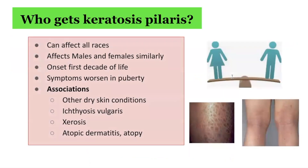Who gets keratosis pilaris? It is most common in adolescents, with 50–80% affected. This disorder is also frequently seen in adults, with 40% of the adult population affected. It can affect all races, and it affects males and females in similar proportions. Its onset is often in the first decade of life, and symptoms worsen during puberty.